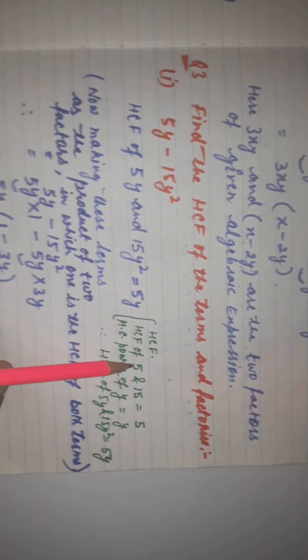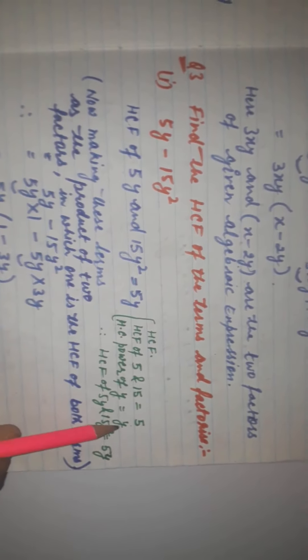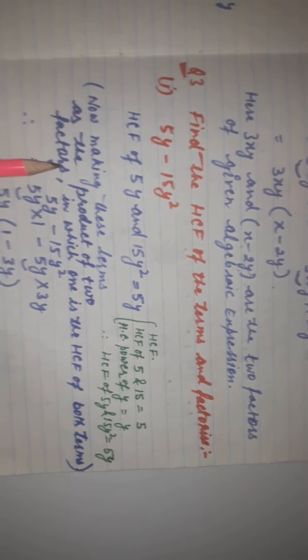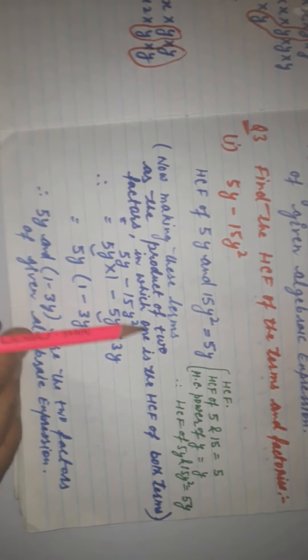The HCF of the coefficients 5 and 15 is 5. The highest common power of y in y and y² is y. So the HCF becomes 5y. Now we make each term as the product of two factors where one factor is the HCF: 5y into 1 gives 5y, and 5y into 3y gives 15y².